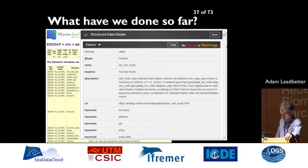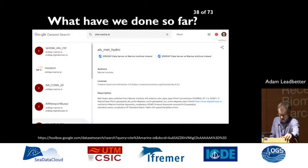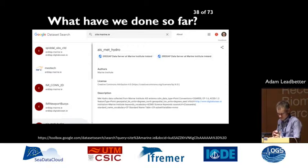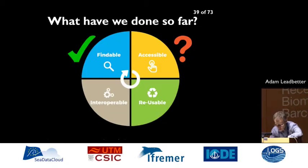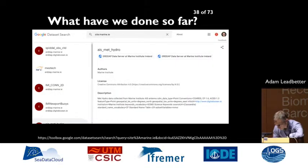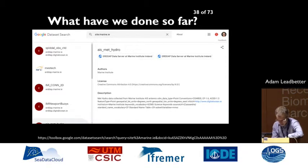That's available for anybody who wants to use it in the latest version of ERDAP. Recently Google launched — it's only in beta at the moment — this toolbox for dataset search. Alexandra very briefly showed some of this yesterday. Here we're searching on marine.ie, searching for anything from a marine.ie domain name within this Google toolbox. The structured information from the ERDAP data server at the Marine Institute in Ireland is being held here. It's also reducing duplication of search results, and it shows the authors, the license, and the description — all coming from the schema.org embedded in that metadata page from ERDAP.